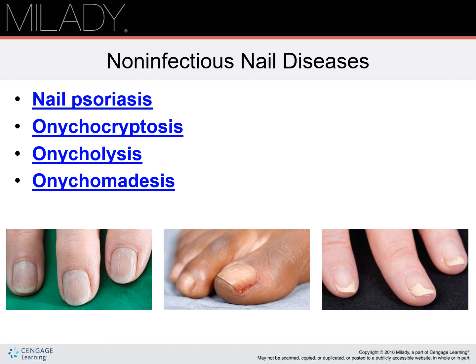Onychoptosis is the separation and falling off of the nail plate from the nail bed. It can affect fingernails and toenails. In most cases, the cause can be traced to a localized infection, injury to the matrix, or severe systemic illness. Drastic medical procedures such as chemotherapy may also be a cause.